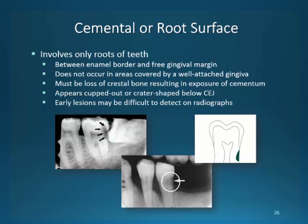Cemental and root surface decay is isolated to the dentinal surface of teeth. A recession may or may not be present. This decay is notorious for appearing with the invasion of a third molar trying to erupt. The pressure of the distal of the second molars from third molar movement creates destruction of the root surface, causing decay to be more of a mechanical force than a bacterial invasion. Cemental decay can also appear due to poor oral hygiene and is commonly seen on the anterior teeth.